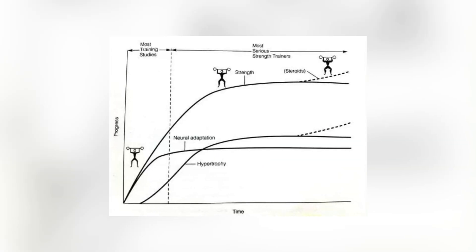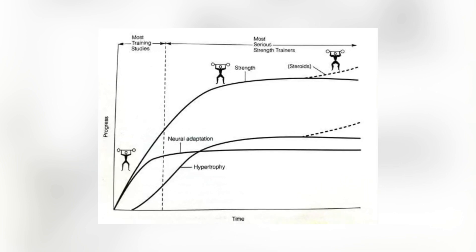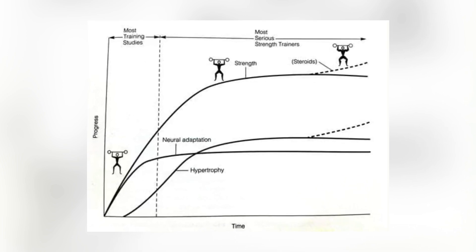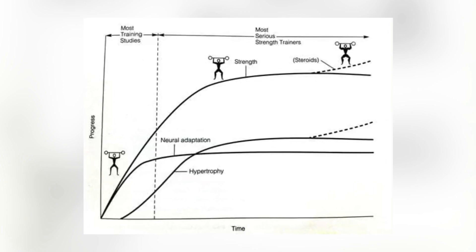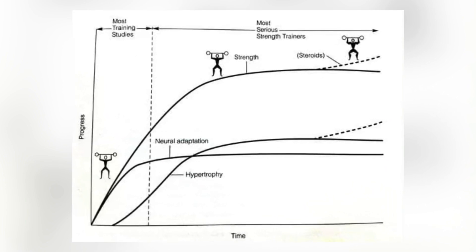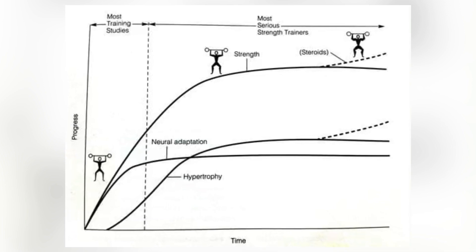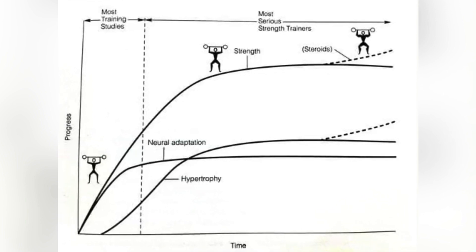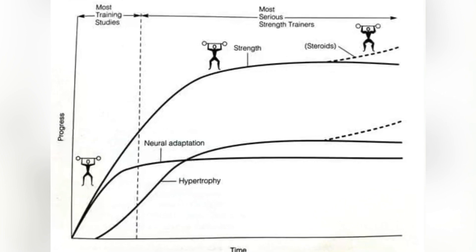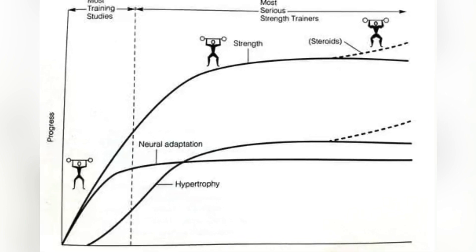A similar graph has been used to explain changes in strength. The top curve represents strength gain over time, and the second curve represents neural adaptation in the central nervous system — this is how someone gets strong in the initial weeks of training. As they become more experienced over time, the neural adaptation diminishes and they need to gain more hypertrophy to continue gaining strength.